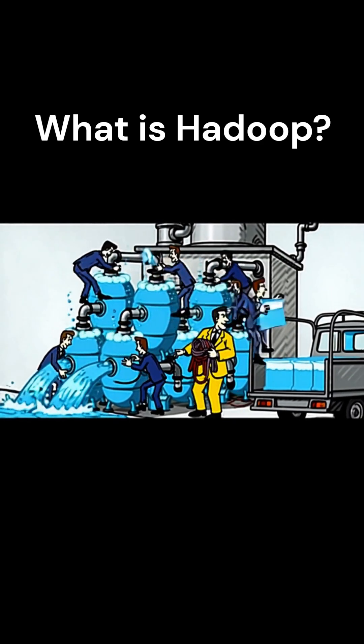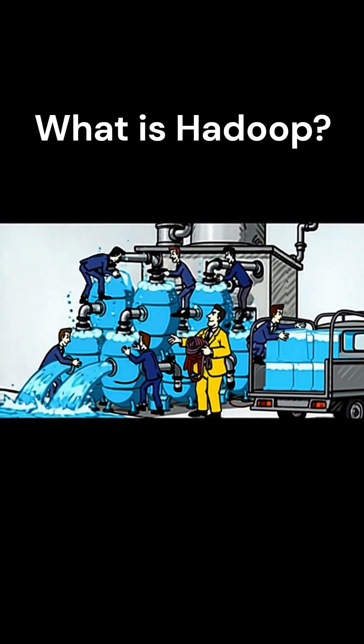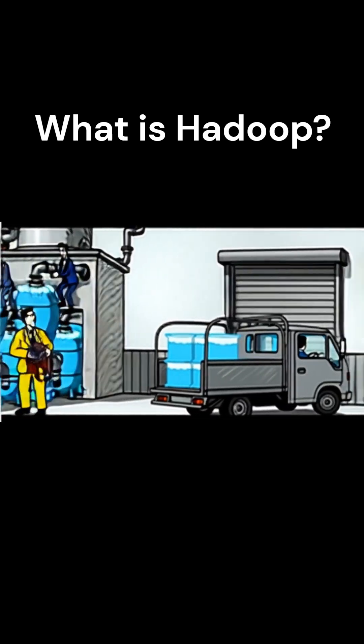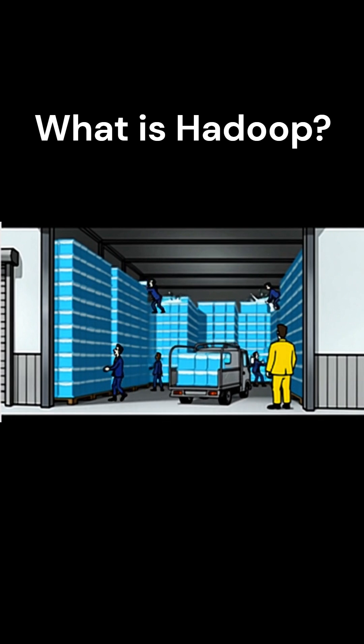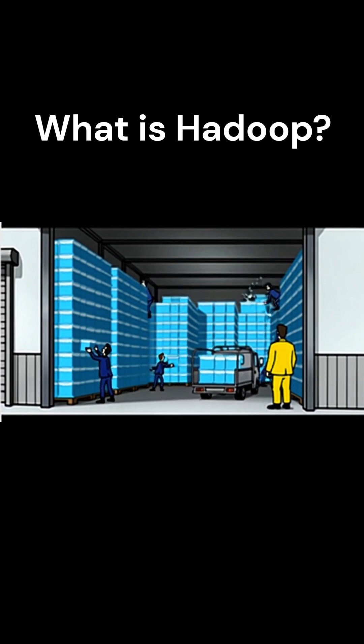But in both cases, the idea is the same. Each machine processes a piece of data at the same time. That's how we deal with truly massive data sets.